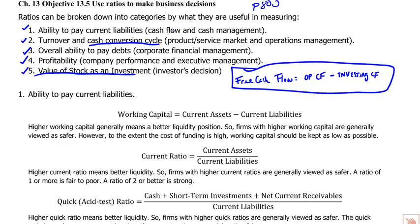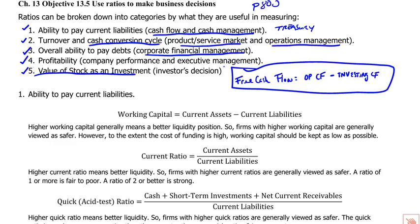Another way to think about these measures: the ability to pay current liabilities is a measure of cash flow and cash management — that's a treasury function within the corporation. The cash conversion cycle is a function of the product/service market and operations management, giving you an indication of how well managed the operations are. The ability to pay debts relates to corporate financial management — decisions about debt, stock, and leverage. Profitability reflects overall company performance and whether executive management has pursued strategies to enhance it.